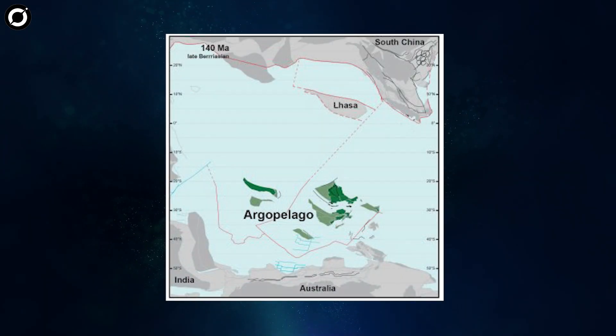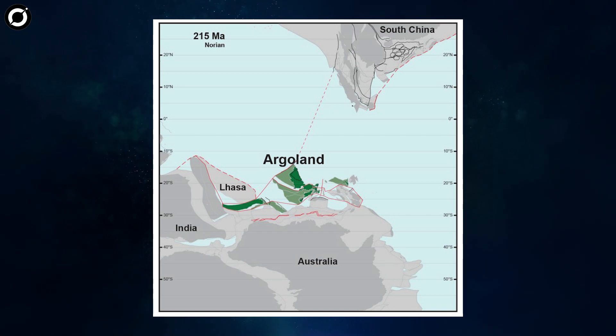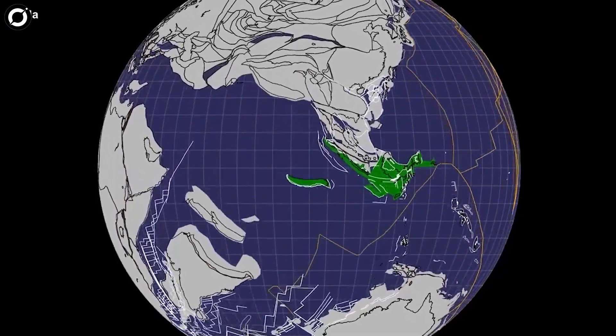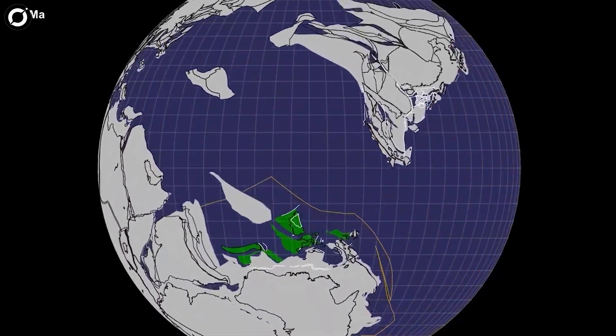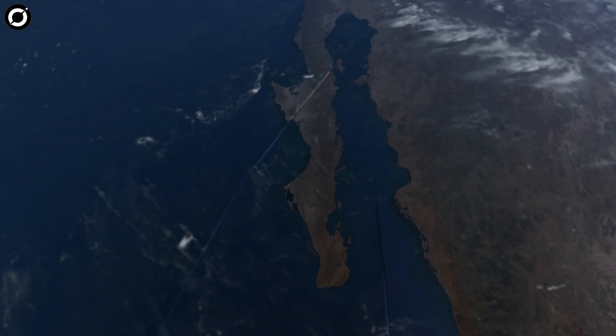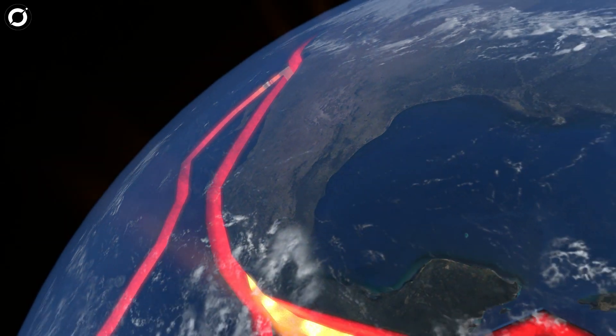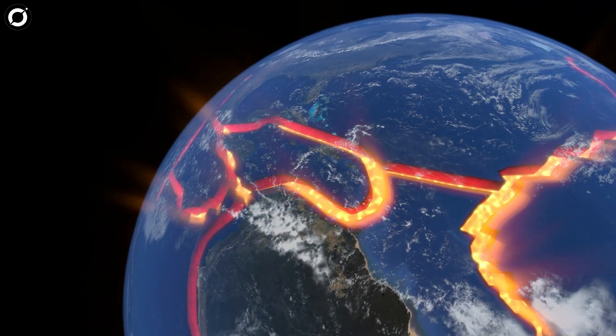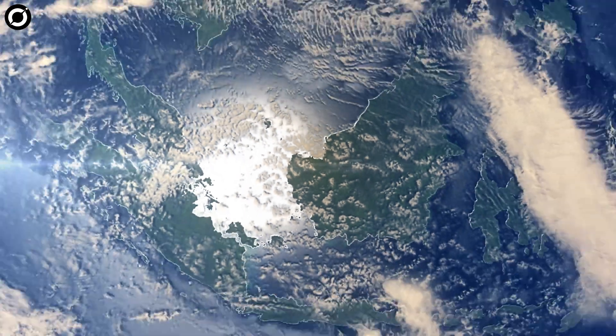Our narrative revolves around the continent known as Argoland, which in the ancient epochs of Earth went through a tumultuous breakup with Western Australia. Driven by relentless tectonic forces, Argoland shattered into countless fragments, drifting northward to find new homes in Southeast Asia.